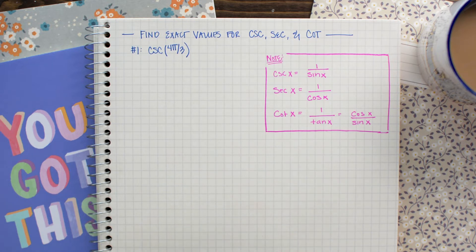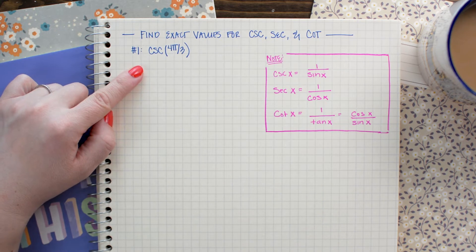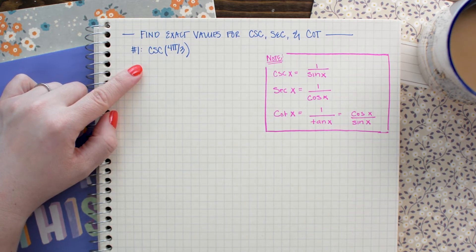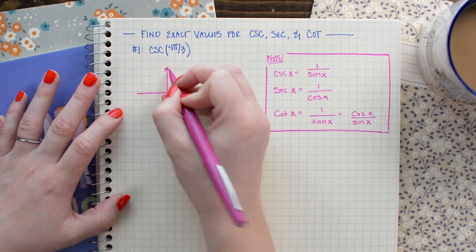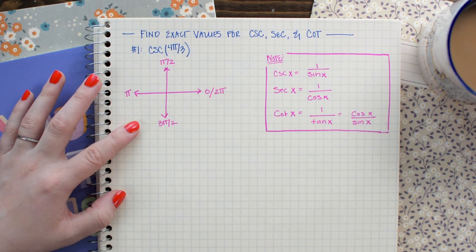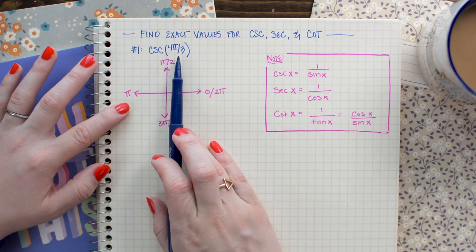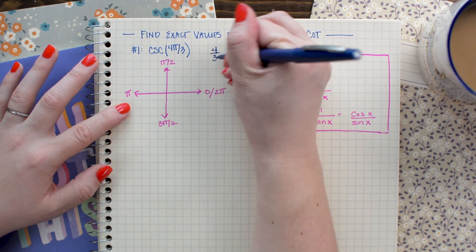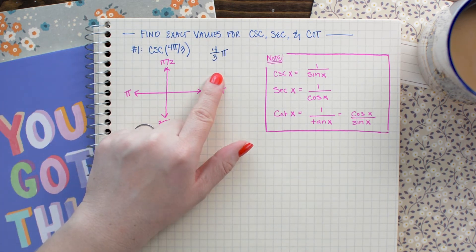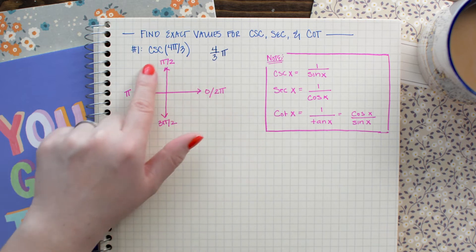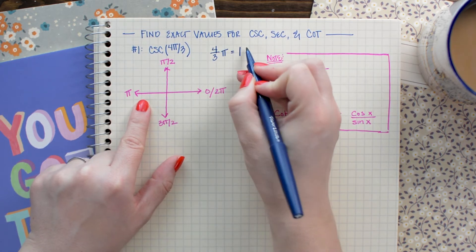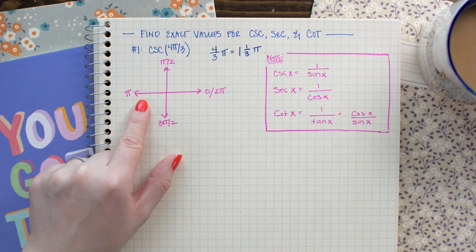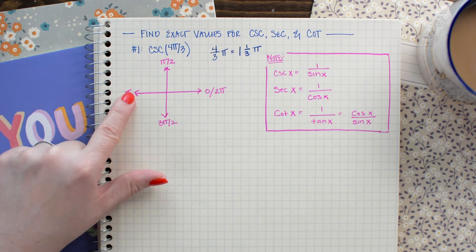We are going to start with our first problem, where we evaluate the cosecant of 4π over 3. Just like in the last problems, we're going to start by making a miniature axes and locating the revolution we're evaluating — in this case, 4π over 3. Recalling from our last lesson, 4π over 3 is the same as 4 thirds π. Since 4 thirds is larger than 1, this angle is going to be larger than 1π revolution, placing it somewhere in the bottom half — it's the same as 1 and 1 third π, so that's 1π revolution plus 1 third π revolution.